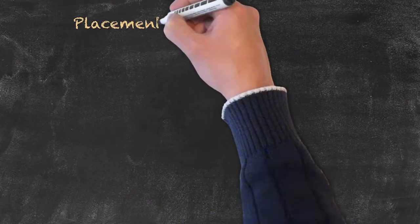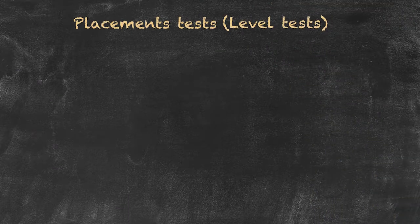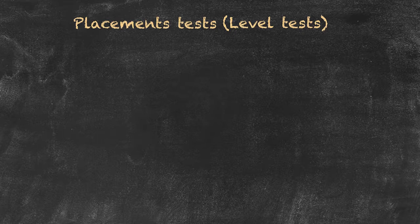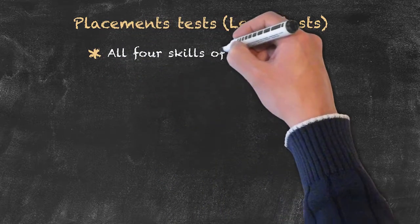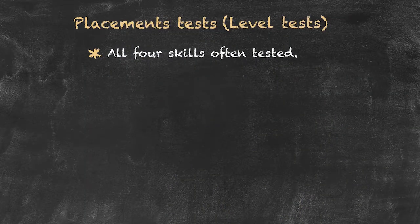Our first type of test is called the placement test. Often they're also called level tests, and as the name implies, what we're trying to do is to place students in a particular level of class. Some of the more common features of these are that all four skills are commonly tested — that means reading, writing, speaking, and listening.